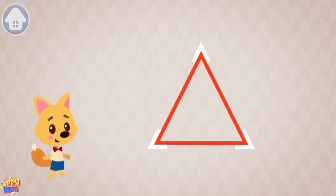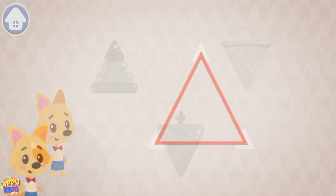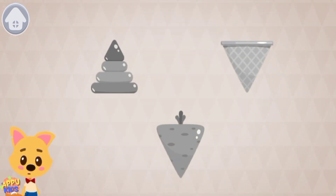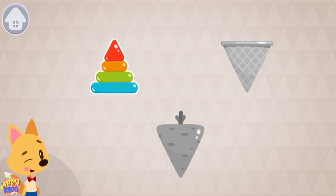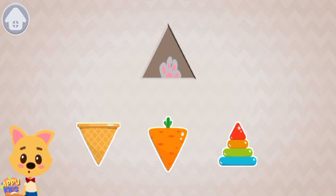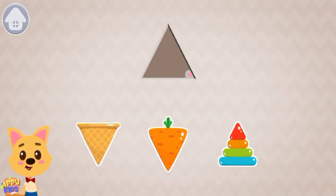Tap on the triangle. These items are triangular. Tap on all the triangular items: pyramid, waffle. Drag all of the triangular items into the triangular window above.